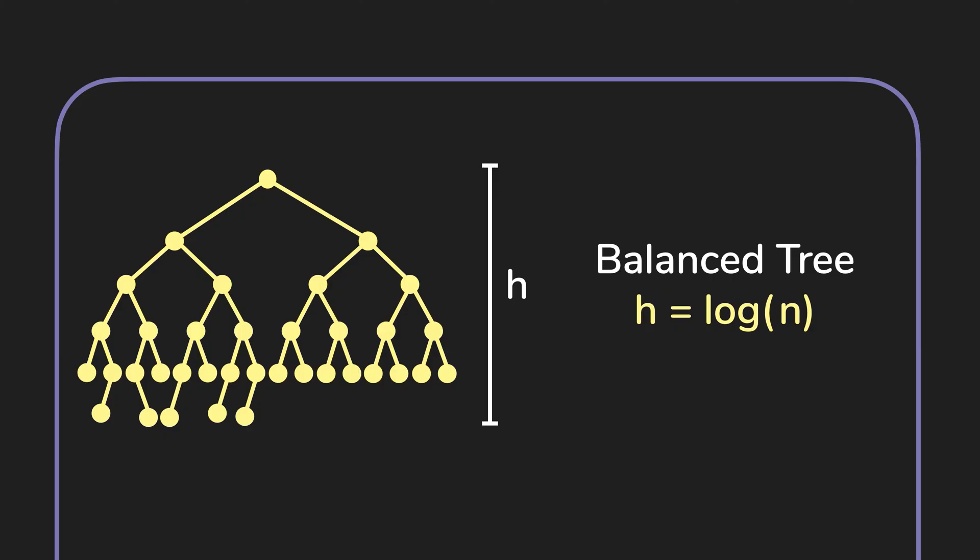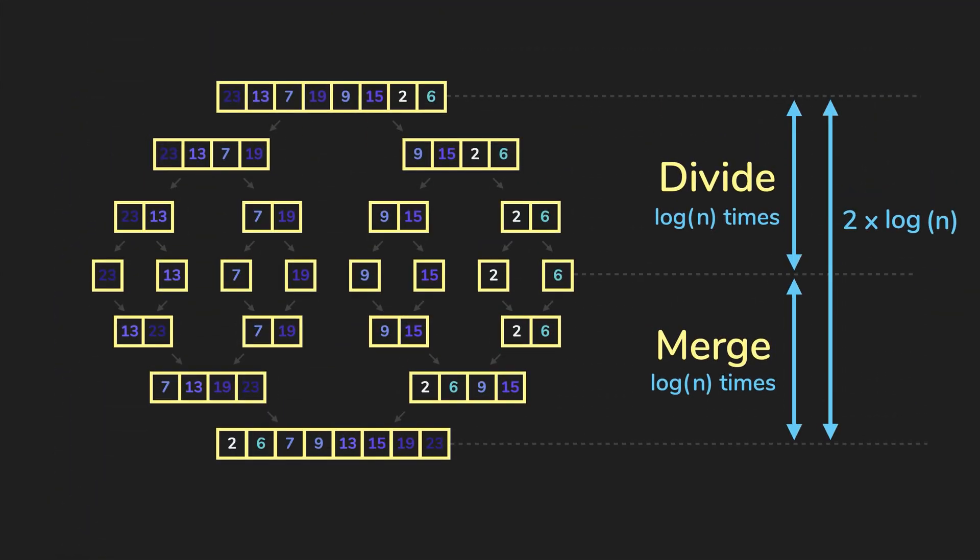The height of the stages for divide is log(n). And the height of the stages for merge is also log(n).